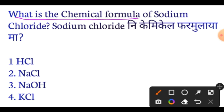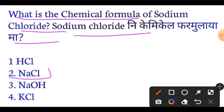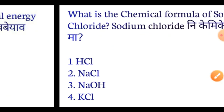What is the chemical formula of sodium chloride? The chemical formula of sodium chloride is NaCl. Next question.